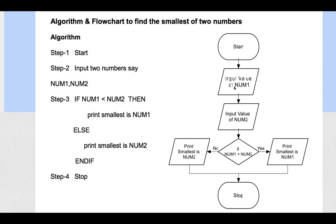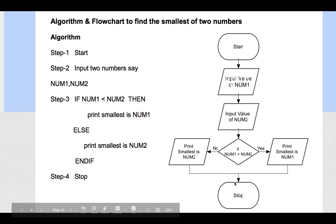In the flowchart, the start and end symbols are the same as before, and the input symbol is used for number one and number two. Next you have the decision-making diamond shape: if number one is less than number two, the yes path prints 'smallest is number one'; the no path prints 'smallest is number two'. Both paths then converge to the stop symbol. This illustrates selection, as opposed to the sequence structure shown in previous examples.